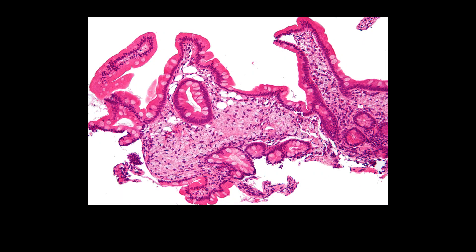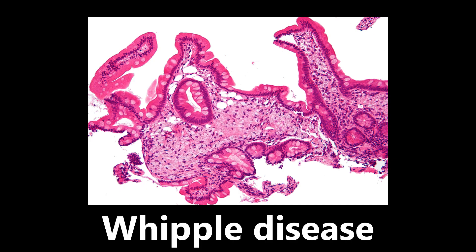Now back to histology. We see empty appearing areas and whitish cells — the goblet cells tell us we're in the intestine. What we're looking at is Whipple disease. Two important features: the empty white areas are lipid vacuoles, and there are enlarged foamy macrophages containing Tropheryma whipplei in the small intestine lamina propria, characteristic of Whipple disease. So orient yourself: goblet cells mean intestine, add lipid vacuoles and foamy macrophages, and you have the diagnosis of Whipple disease.